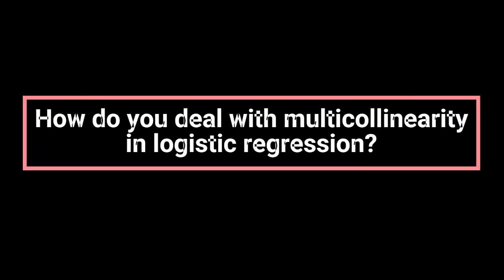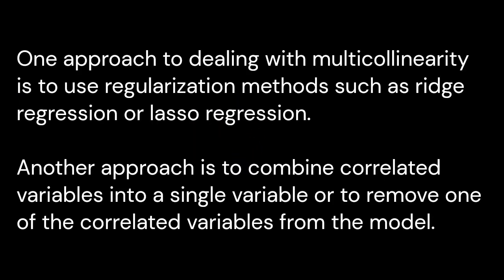How do you deal with multicollinearity in logistic regression? Multicollinearity can be a problem when the predictor variables are highly correlated with each other, causing the coefficients to be unstable and difficult to interpret. One approach is to use regularization methods such as ridge regression or lasso regression. Another approach is to combine correlated variables into a single variable or to remove one of the correlated variables from the model.